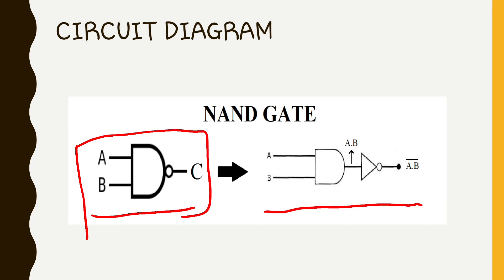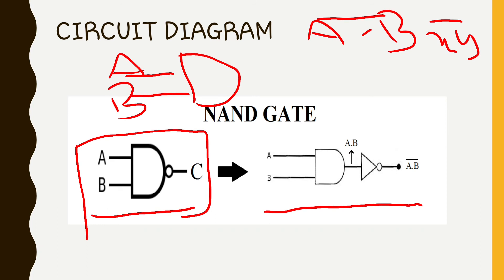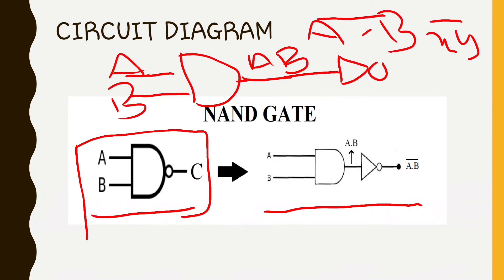If we look at A and B, then for the NAND gate the output is Y bar. First we will take our inputs A and B. Then here we have the input which goes through A and B to the AND gate. But what do we need? We need A and B to go through a NOT gate, so we place the NOT gate here after the AND gate. I hope you understand how the NAND gate is constructed.